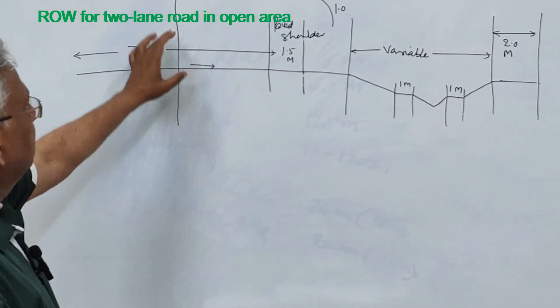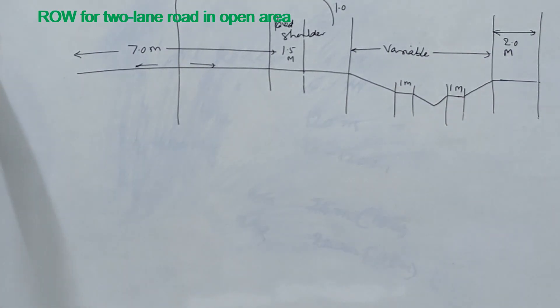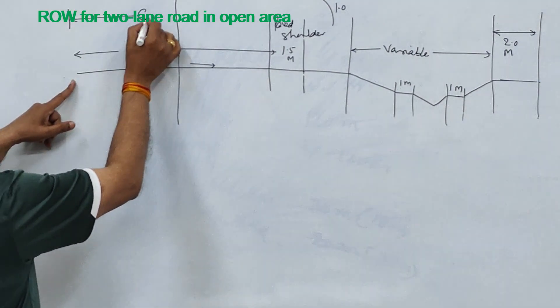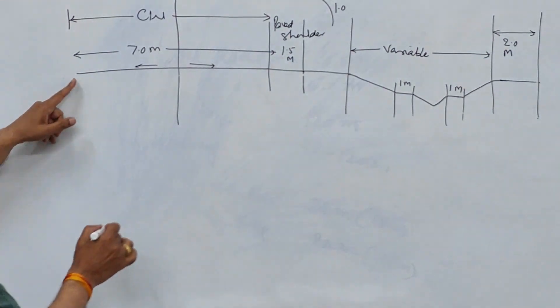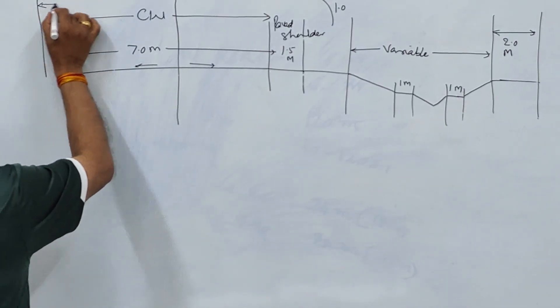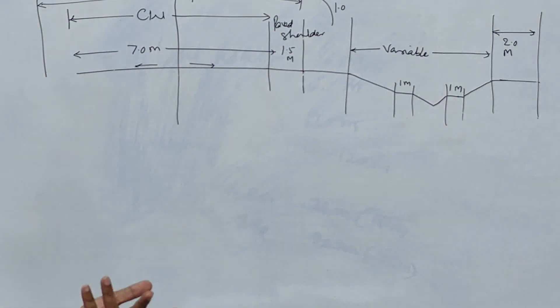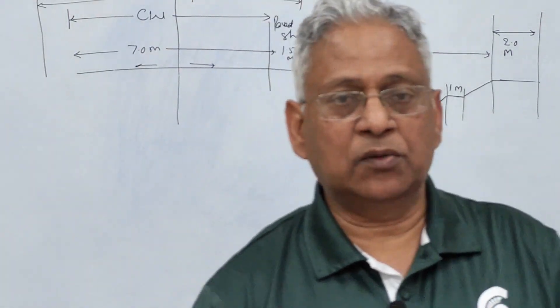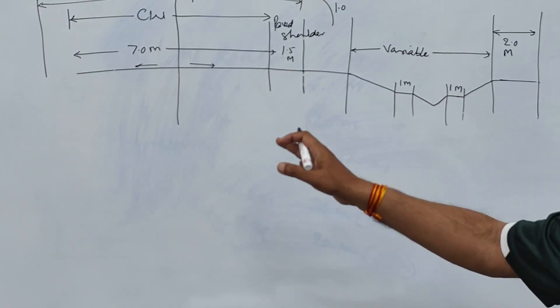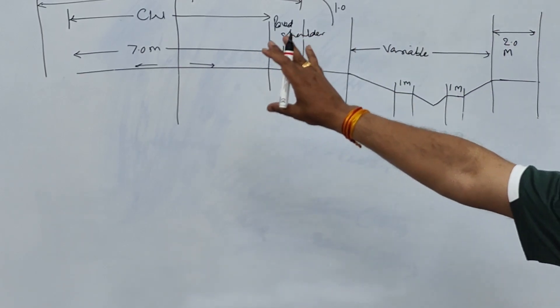Now this will be a variable width that will depend upon the side slope height of the embankment. But this berm here on either side of the drain is kept 1 meter. 1 meter here and 1 meter here. So this is the same details from the center line. Same details you have on this side also. And that total is the right of way. This is the carriageway width. CW which is your 7 meter wide. Carriageway width plus paved shoulder is roadway width. Here that is RW. Roadway width up to paved shoulder. Or sometimes if you do not provide paved shoulder then simply other shoulders then the carriageway width plus shoulders is the roadway width. So this is the right of way for a 2 lane road which is in open area.